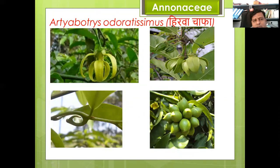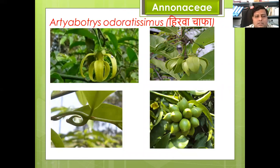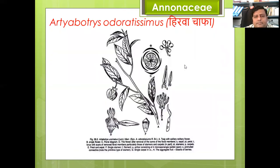Here is another example of family Annonaceae: Artabotrys odoratissimus. You can see the flowers, which have a very pleasant smell. Here is the diagrammatic representation of Artabotrys, showing the floral diagram and the twig with leaves.